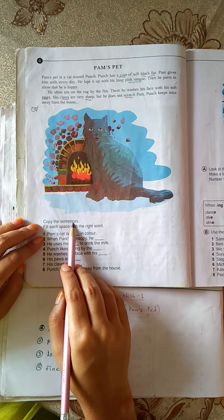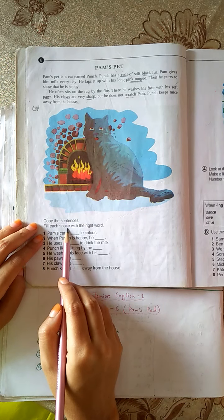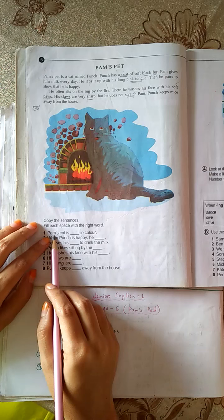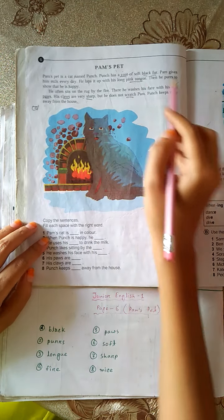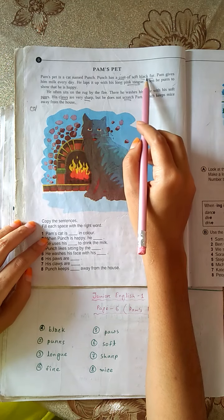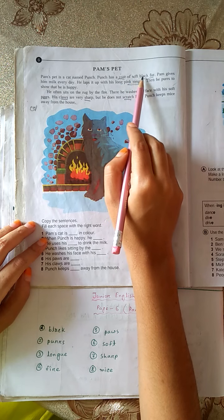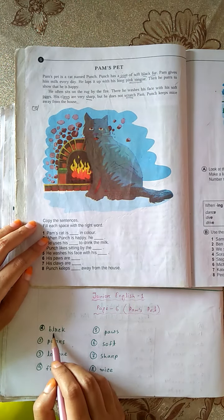Copy the sentences. Fill each space with the right word. 1. Pam's cat is dashed in color. Here given, Punch has a coat of soft black fur. The answer will be black.